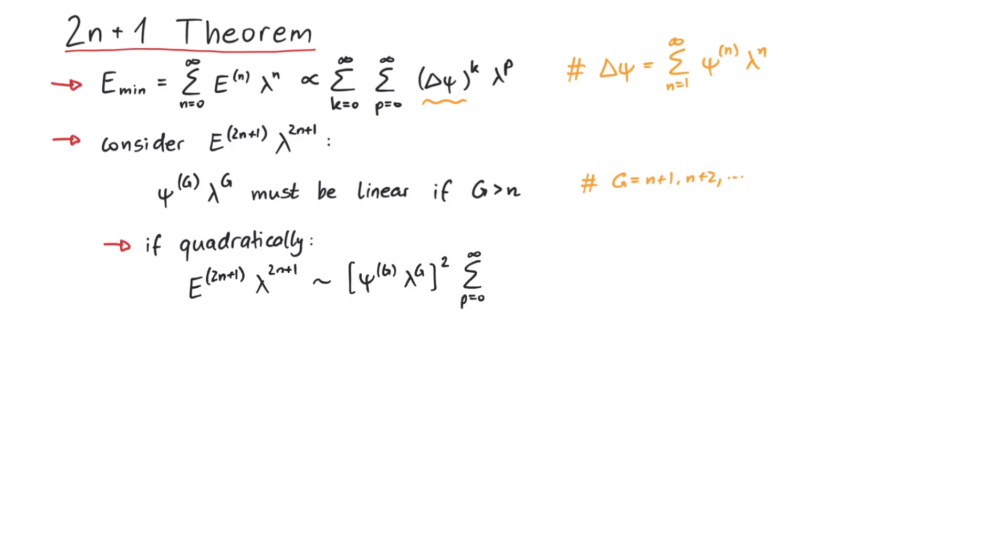This is proportional to lambda to the power of 2g. And since the smallest value that is larger than n is n+1, this is at least proportional to lambda to the power of 2n+2. Now, whatever value p takes, it will always be greater than 2n+1, and therefore not contribute to E_{2n+1}. Therefore, expansion coefficients psi_g only appear linear if g is greater than n.